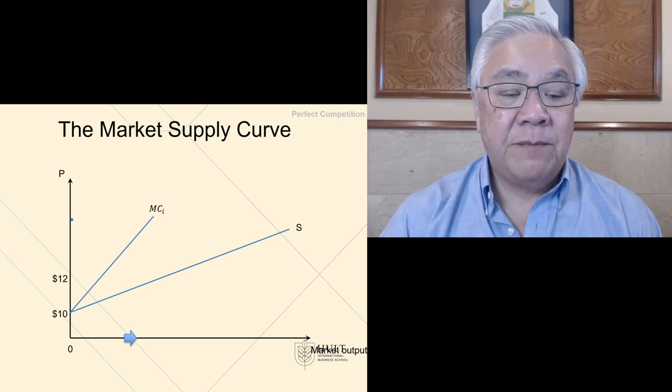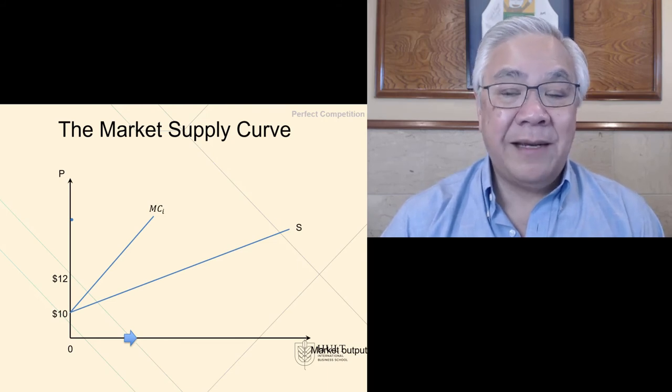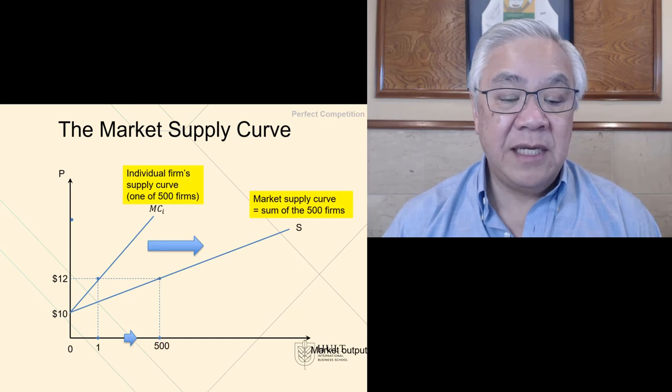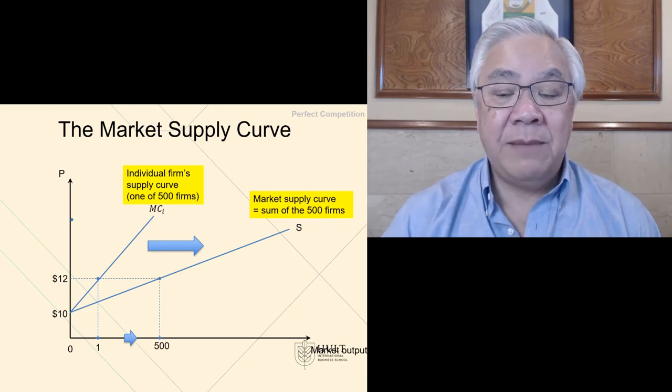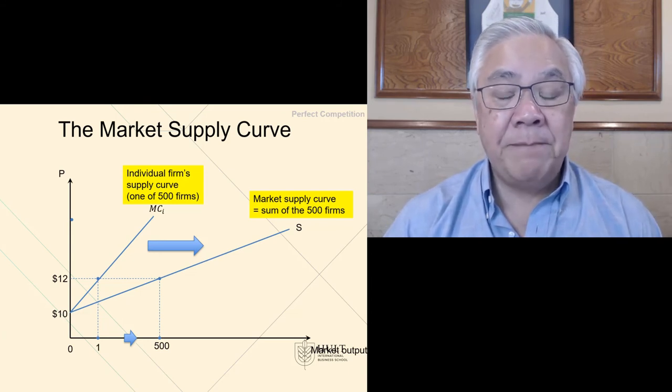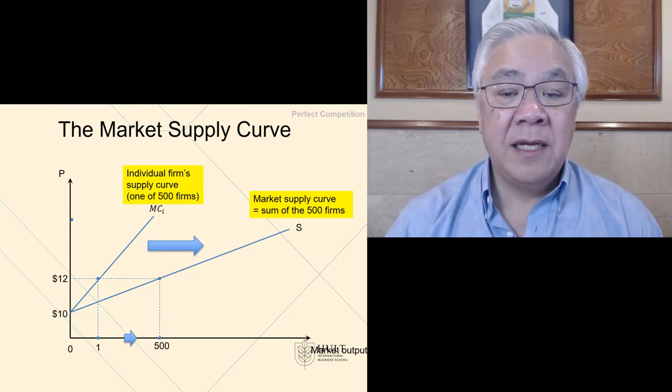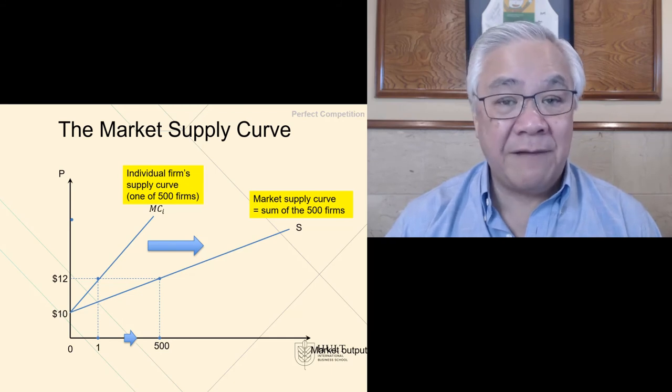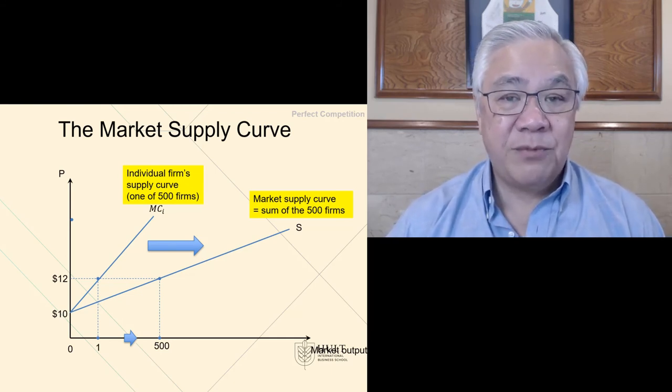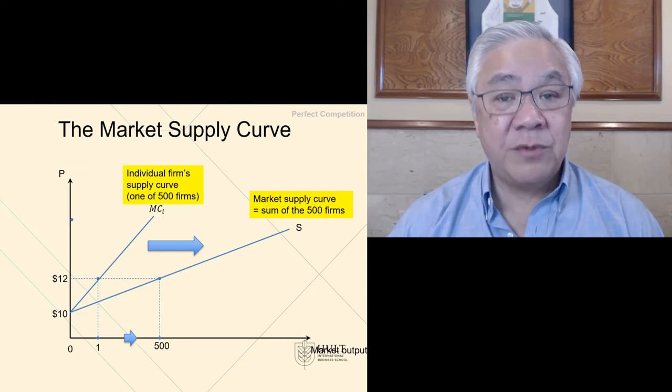So an individual supply would go where the average variable cost and marginal cost intersect. Now that's for one firm. Let's call it MC1. And as we aggregate across, we see that we can get to a market supply curve. We aggregate in this scenario, 500 firms, we'll get to a market supply curve because the market is comprised of, say, the 500 firms. Similar to what we did with demand where demand is comprised of a number of consumers in the market.